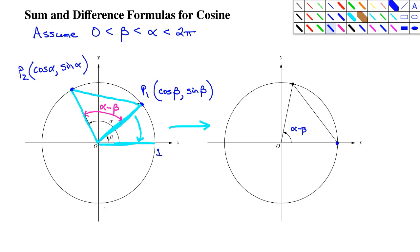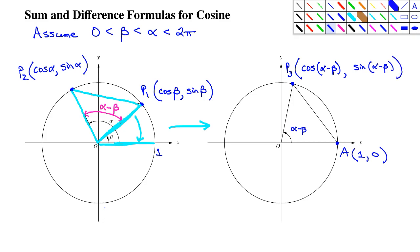We now have some new points to deal with. Point A is the terminal side of the standard position angle for zero, which is automatically (1, 0), since cosine of zero is one and sine of zero is zero. Point P3 is on the unit circle on the terminal side of the angle alpha minus beta. So the x-coordinate is cosine of (alpha minus beta) and the y-coordinate is sine of (alpha minus beta). We treat alpha minus beta as a single entity.